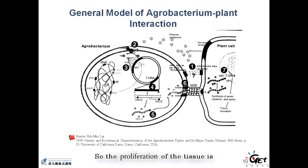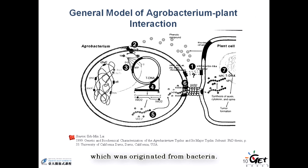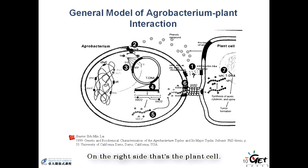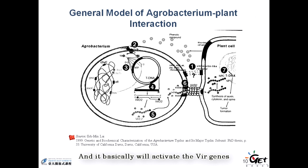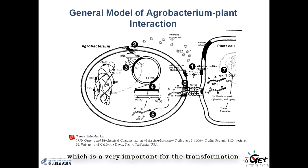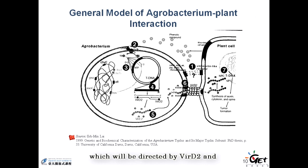The crown gall is a proliferation of cells like a tumor on the surface of the stem of the plant. The proliferation of the tissue is basically from a cytokinin effect, and this cytokinin gene came from a particular piece of DNA called T-DNA, which originated from bacteria. On the left side is an enlargement of the Agrobacterium cell, and on the right side is the plant cell. When Agrobacterium senses the plant signal, it triggers a two-component signal transduction system that activates the VIR genes on the Ti plasmid, which is essential for transformation. The T-DNA is then directed by VirD2 and the type IV secretion system to the host cell.